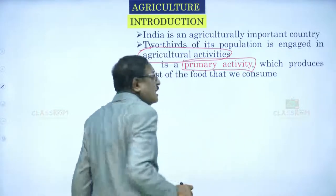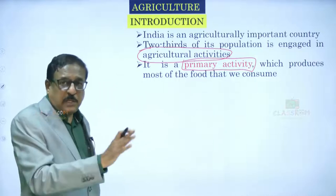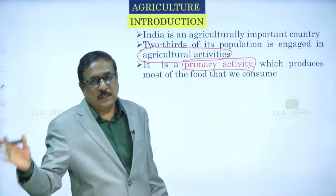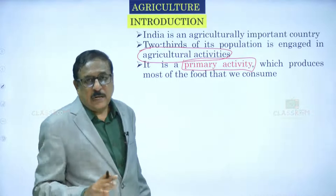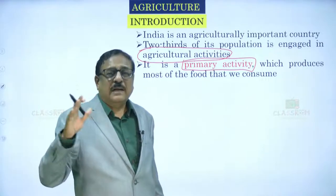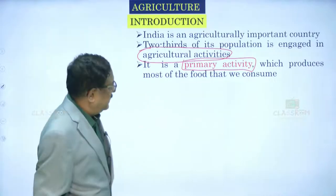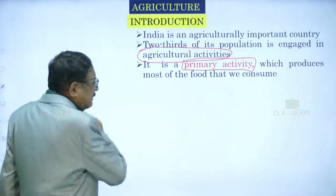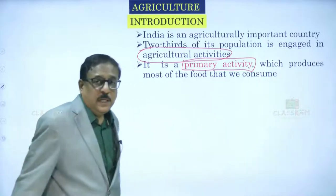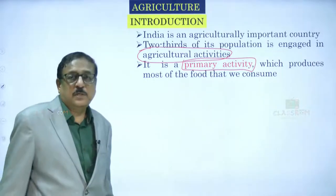Primary activity we already know about. Secondary activity is processing whatever comes from the primary activity. Tertiary activity involves marketing, services, and all such things. So agriculture is a primary activity which produces most of the food we consume — a popular quote is: no farmer, no food.